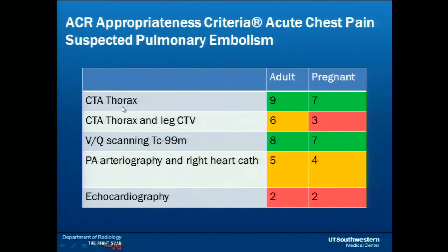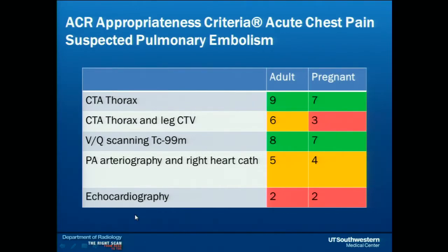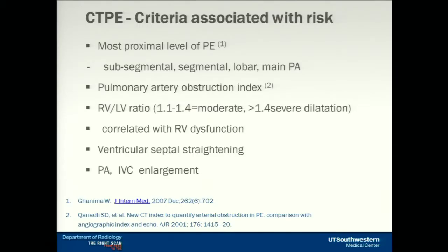For pulmonary embolism, CT of the thorax is appropriate whether you are an adult or an adult who is pregnant. CT of the thorax and lower extremity combined is considered uncertain, and certainly not appropriate in pregnancy because you could replace the lower extremity CT venogram with ultrasound that has no radiation. Echocardiography really doesn't have a role here. MRI is also absent — the PIOPED-3 trial showed us that it is not a good modality for pulmonary embolism detection.